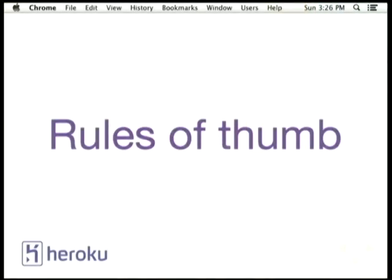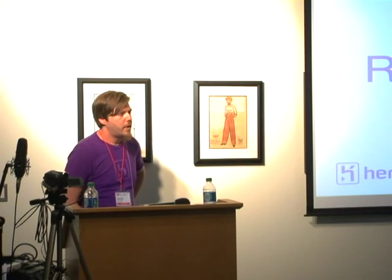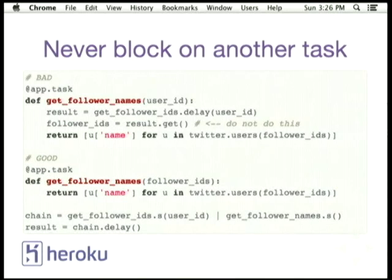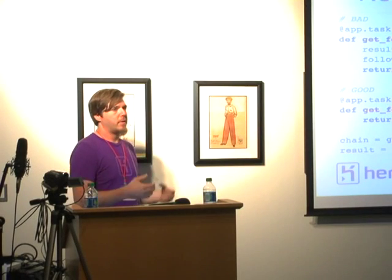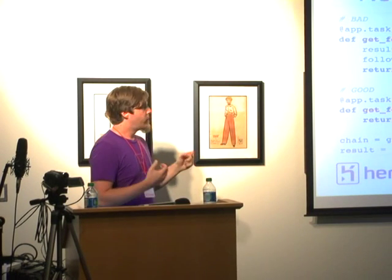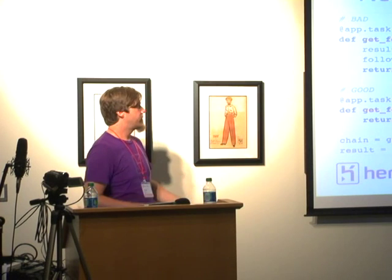I've put together a few rules of thumb that aren't directly related to workflows but are some best practices from my years using Celery. The first one is pretty obvious: never block on a task from a task or from any process, really. The whole idea of Celery is that it's meant to be concurrent, and if you have one process waiting on another process to finish and doing nothing, then you are wasting your concurrency. Always find ways to compose tasks together rather than blocking on one task and getting the result in a synchronous manner before moving on.